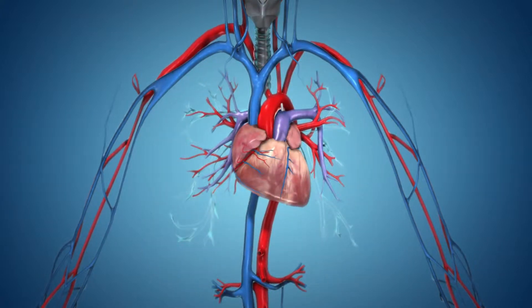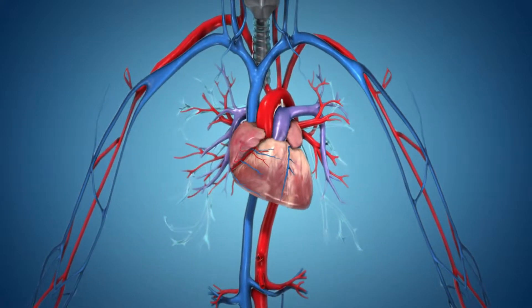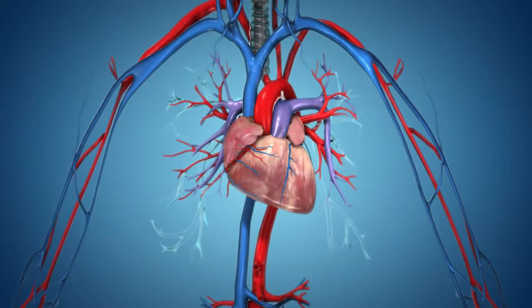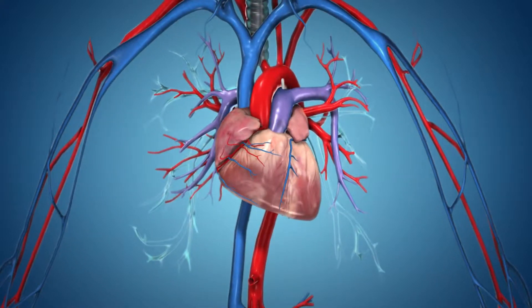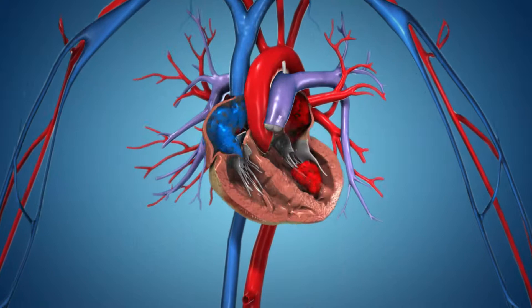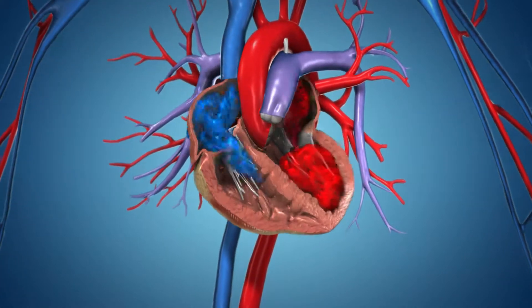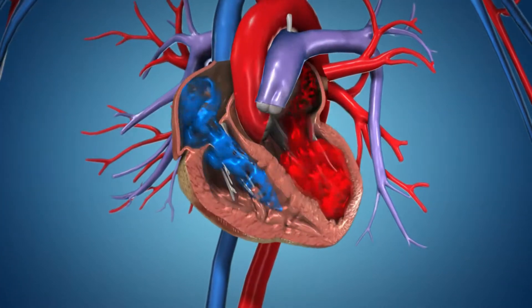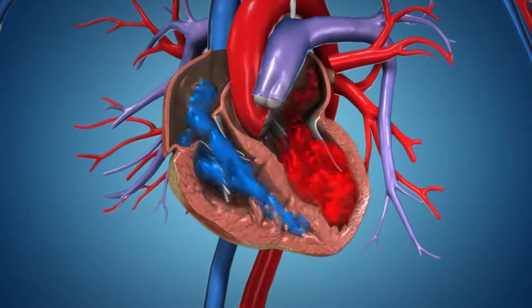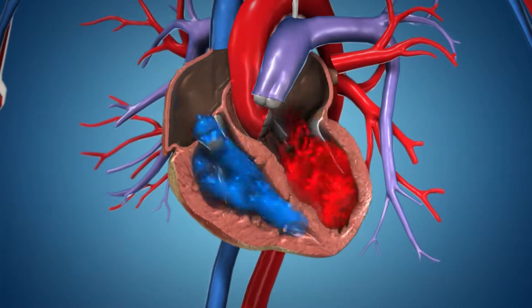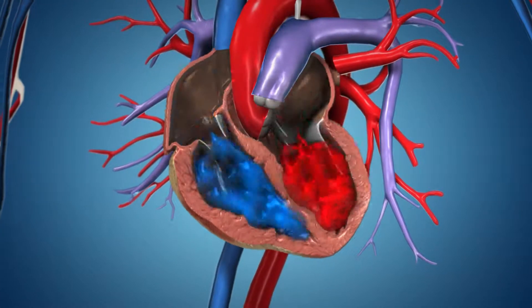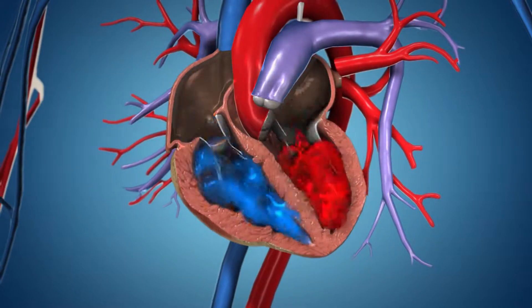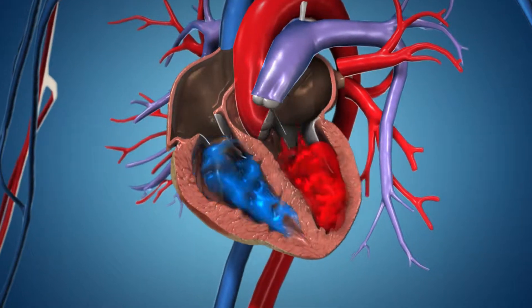To pump blood effectively, the heart must contract fully to force blood out of the heart, and then relax completely, to allow the ventricles to refill with an adequate amount of oxygenated blood.